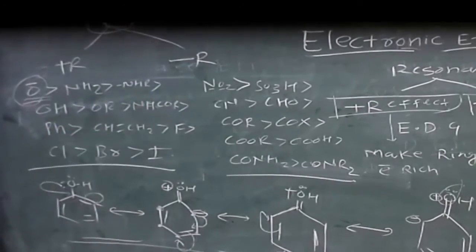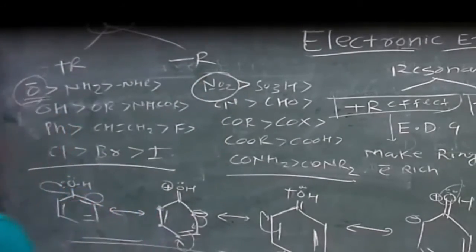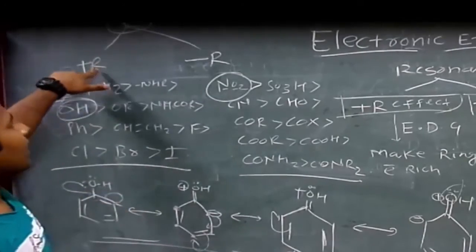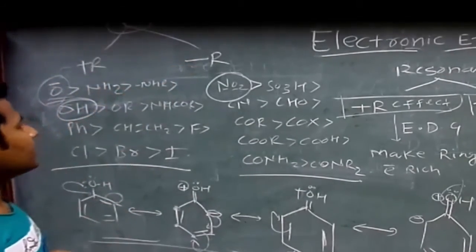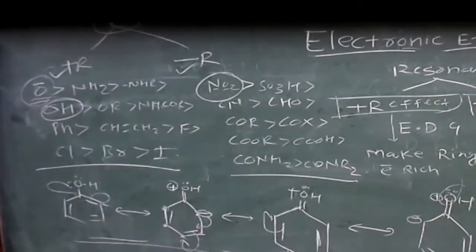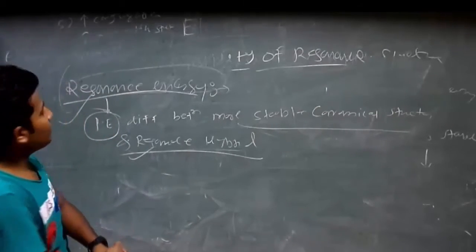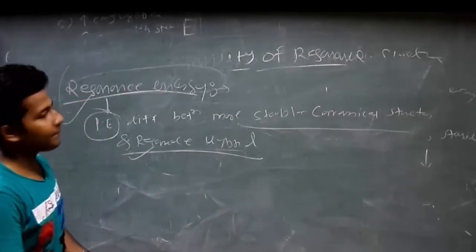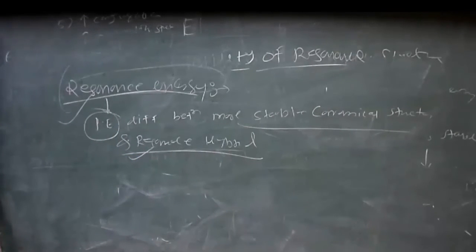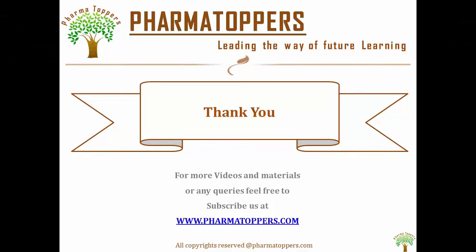Remember all these examples. Next we will see how these substituents are able to draw the resonating structure showing plus R and minus R. First we will see the structure of plus R, then minus R. To know all pharma videos, please subscribe to our website PharmaTalker. Thank you.